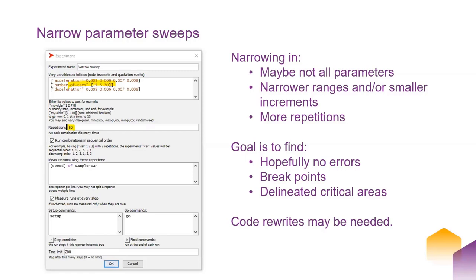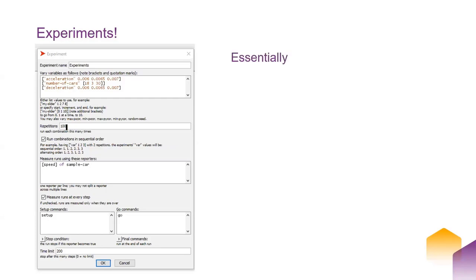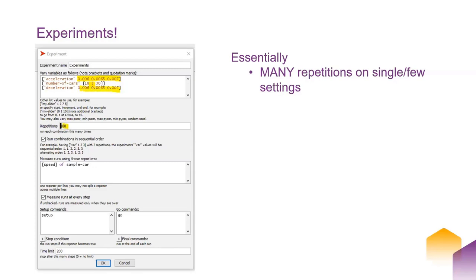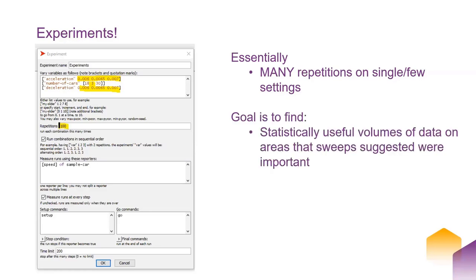There is a chance you will need some code rewrites in the narrow sweep, but they will probably not be major. Finally, if you've gone through broad sweeps and narrow sweeps and done all the code rewriting, experiments are really very narrow sweeps. There are many, many repetitions on a single or very few settings — the increments are even narrower, the list of different settings is much smaller, and the repetitions much bigger. The goal is to find statistically useful volumes of data on areas that the sweeps suggested were important.